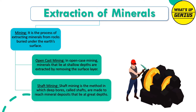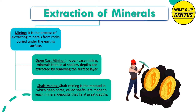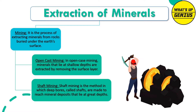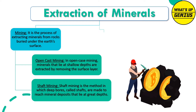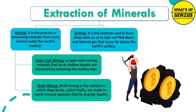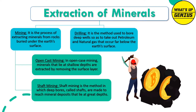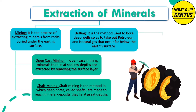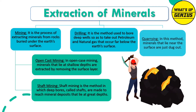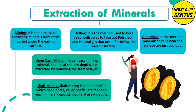Shaft mining is a method in which deep bores called shafts are made to reach mineral deposits that lie at great depths. Drilling is the method used to go deep into the earth so as to take out petroleum and natural gas that occur far below the earth's surface. In quarrying, minerals that lie near the surface are simply dug out.